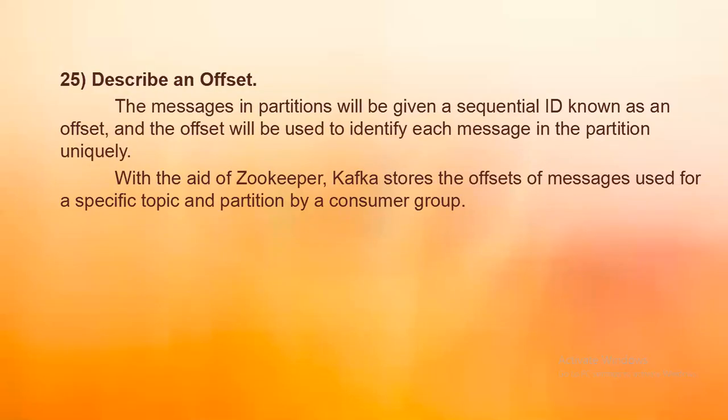Describe an offset. Messages in partitions are given a sequential ID known as an offset. The offset is used to identify each message in the partition uniquely. With the aid of ZooKeeper, Kafka stores the offsets of messages consumed for a specific topic and partition by a consumer group.